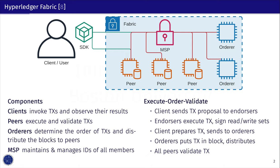Fabric has a unique execute-validate transaction process. The client first sends the transaction to endorsers, a set of peers that run the transaction in isolation and sign the result of it — the read-write sets. With the endorsements, the client constructs a transaction object and sends it to orderers. Orderers order, pack, and distribute the transaction. Finally, all peers verify the transaction by checking the endorsements and that the result of the transaction matches the endorsed one.